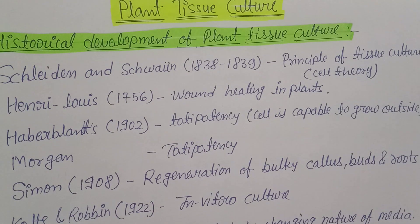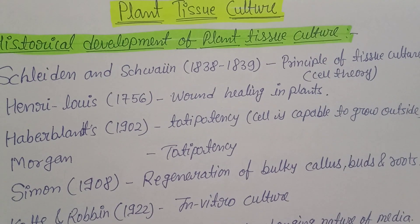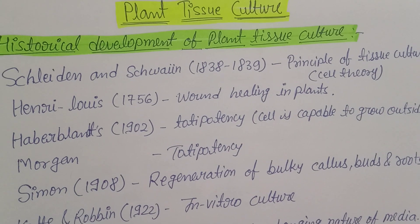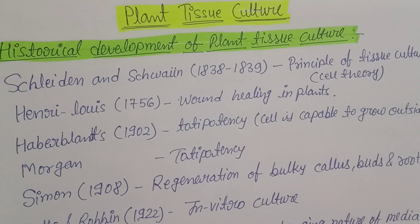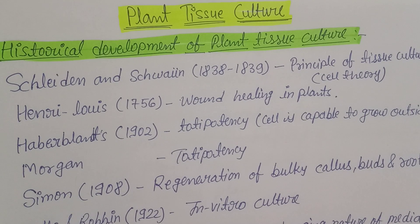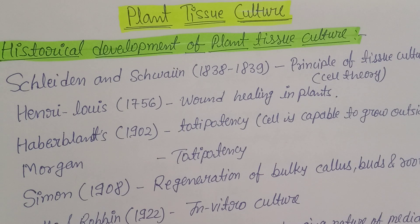Hello students, now we are going to discuss about plant tissue culture. The historical development of plant tissue culture is very important — it is there in Unit 3 of Pharmacognosy and it may be asked for 5 marks or 10 marks. When we talk about the history, we need to reveal the series of scientists, their time duration, and what kind of contribution they gave into the field of tissue culture.